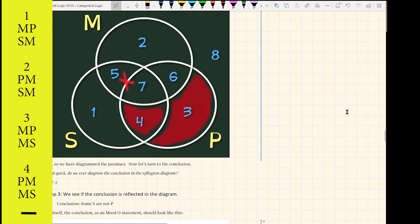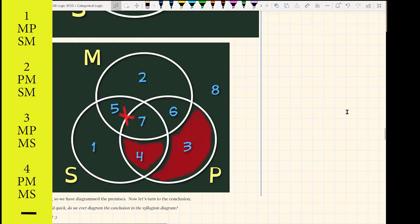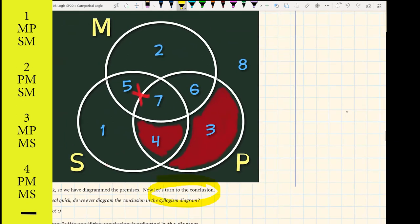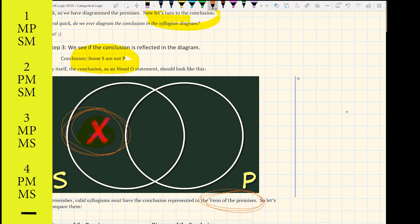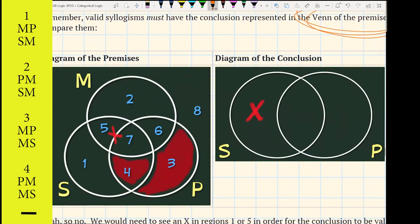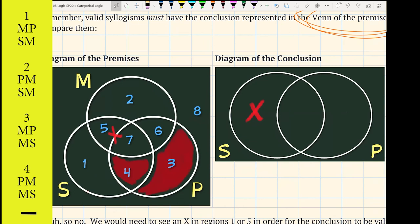Let's see where we are. So we diagram the premises and we want to know what would the conclusion look like. So we turn towards the conclusion. And this is what the conclusion should look like. Some S are not P. So we would just want, as we see, this right here. So does this show up in the Venn of the premises? Well, let's take a look. Let's compare them. So here's the diagram of our conclusion by itself. Here's our diagram of the premises.